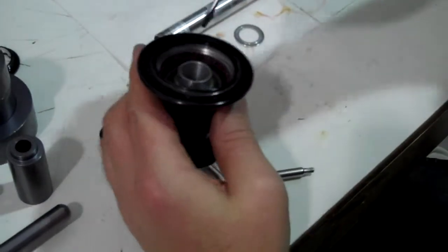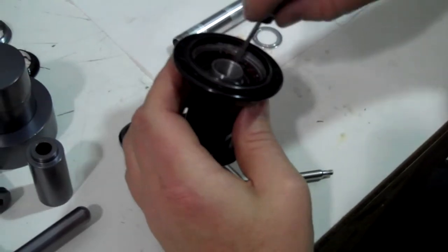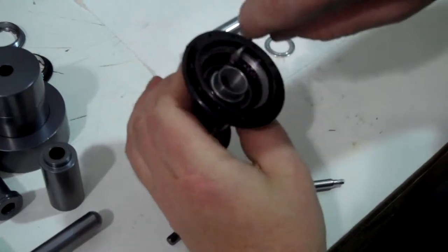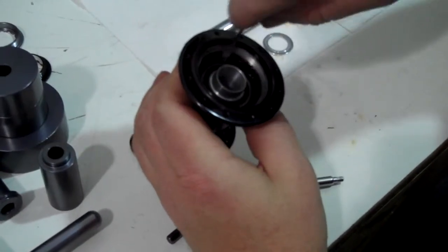And then I'll take a small screwdriver like this and I'll just sort of paint the grease around so that it's evenly covering all the pawls there like that.